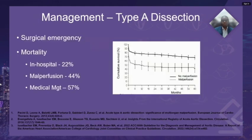Management of type A dissections is usually a surgical emergency and so is managed by surgical intervention. In that context, the in-hospital mortality is about 22%, though it notably doubles to about 44% in the presence of malperfusion, and is significantly higher in patients who are managed medically.